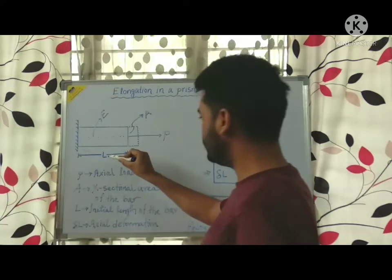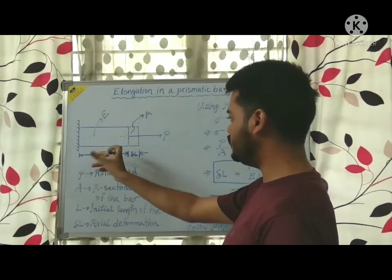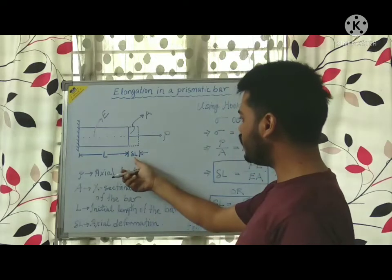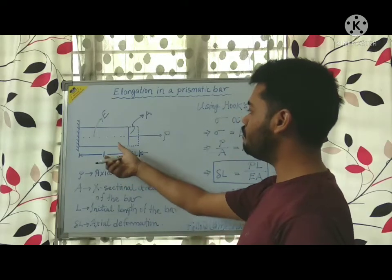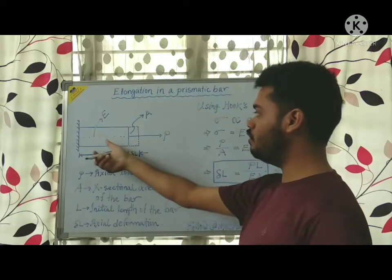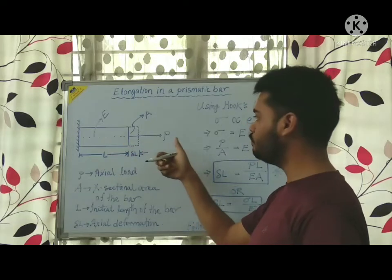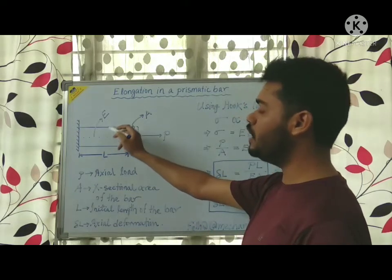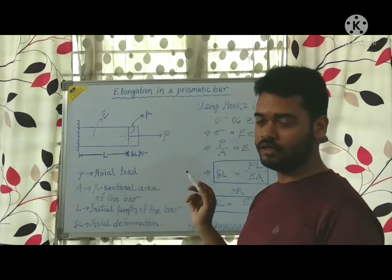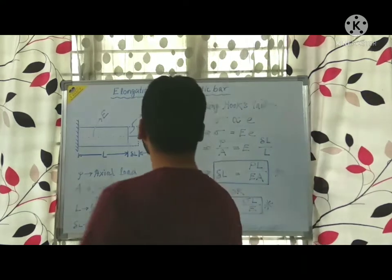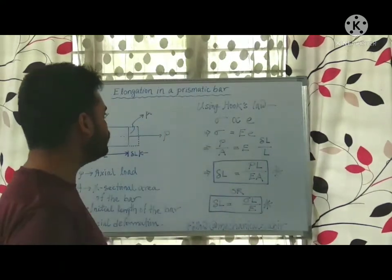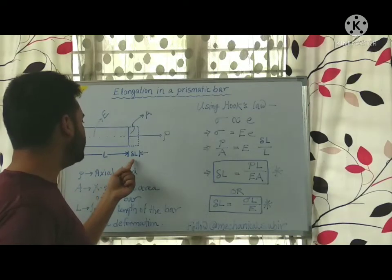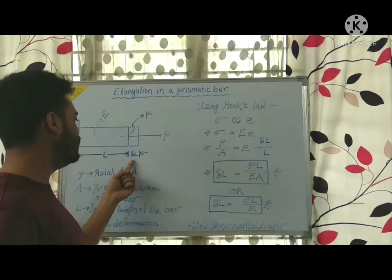L is the initial length of the bar, delta L is the elongation due to application of this load P along its axis, and E is the Young's modulus of the member. Our aim is to find the formula for axial deformation of this bar due to application of this load P.